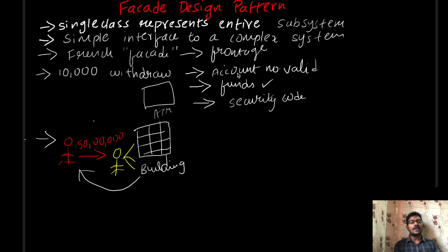After validating all these things, then 10,000 rupees would be withdrawn from ATM. These are the complex things that are handled behind the scenes.